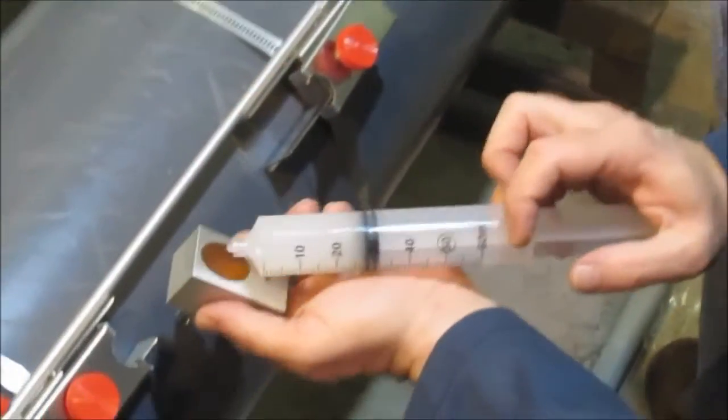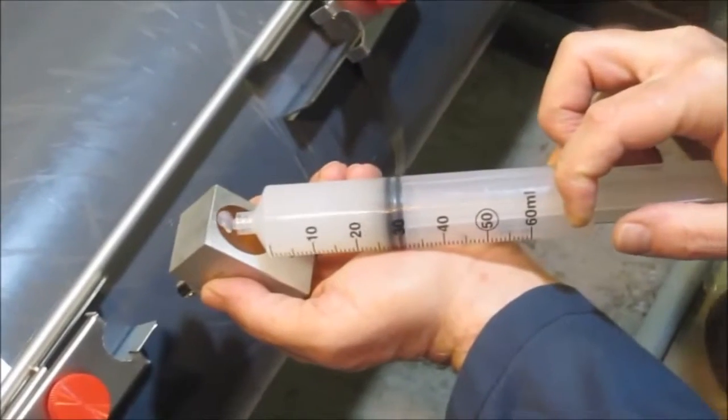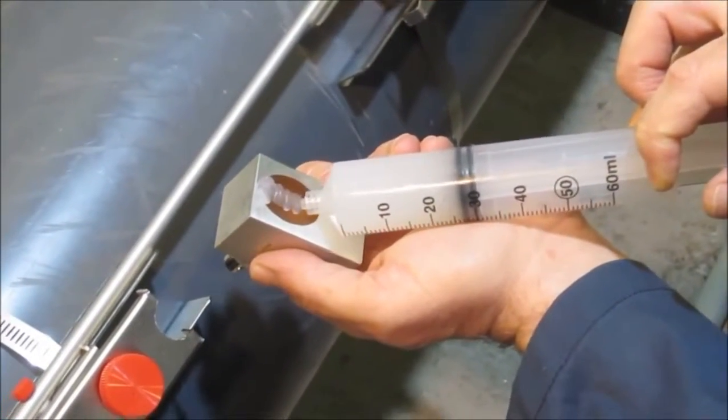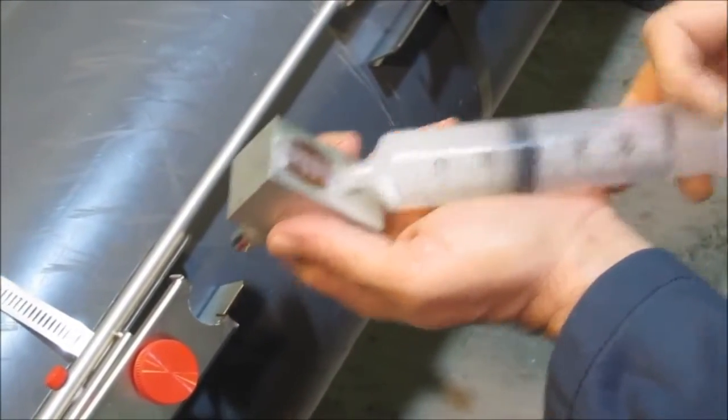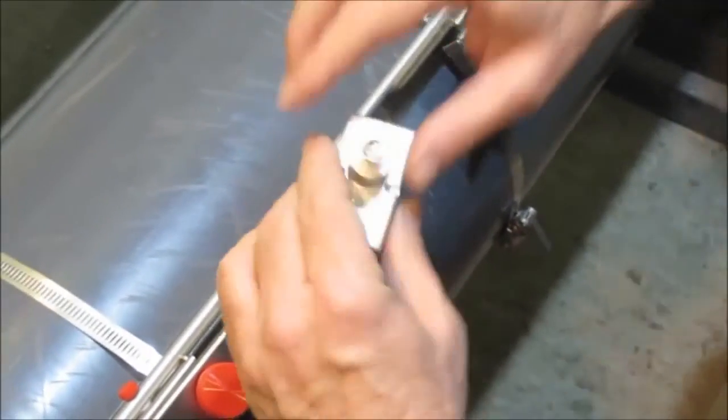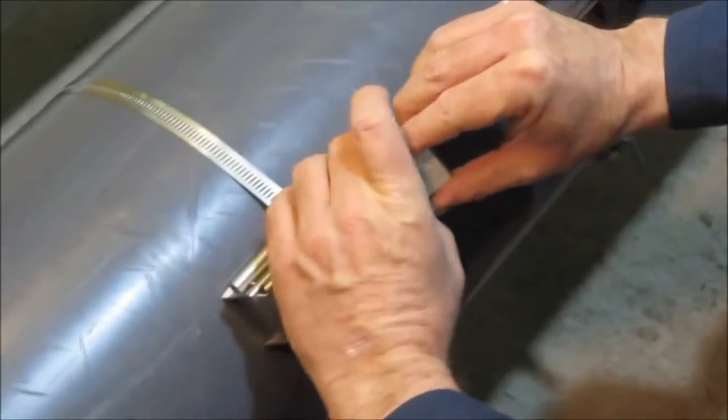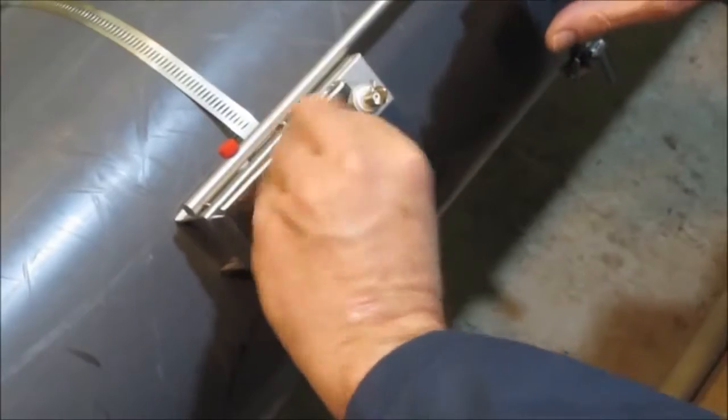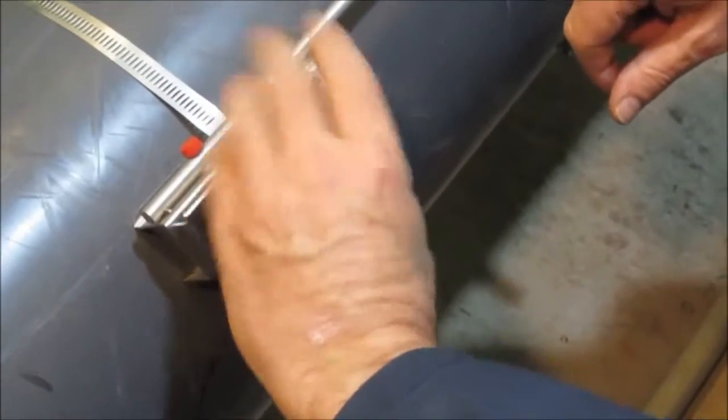Coupling compound is applied to the face of each transducer to help conduct sound efficiently into the pipe. Then we insert the transducer into the mounting bracket and secure in place.